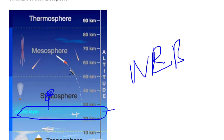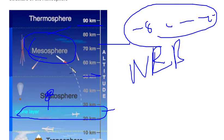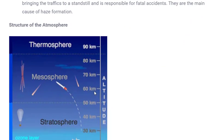Moving to the mesosphere — its distance lies from around 50 to 90 km. The temperature here is very low, around minus 80 to minus 100 degrees Celsius. All kinds of meteoroids and comets that come toward the earth's surface start burning in this layer due to heavy friction. So meteoroids burn up in the mesosphere.